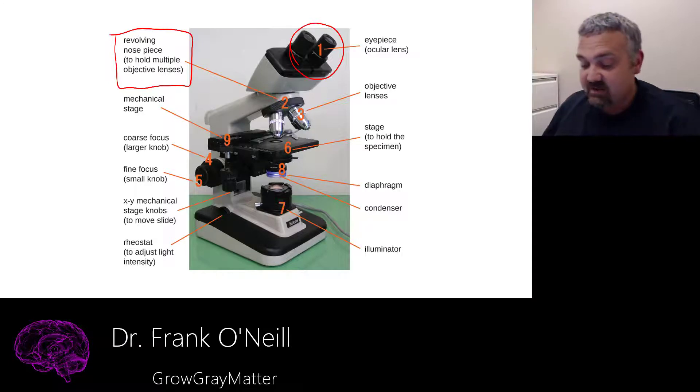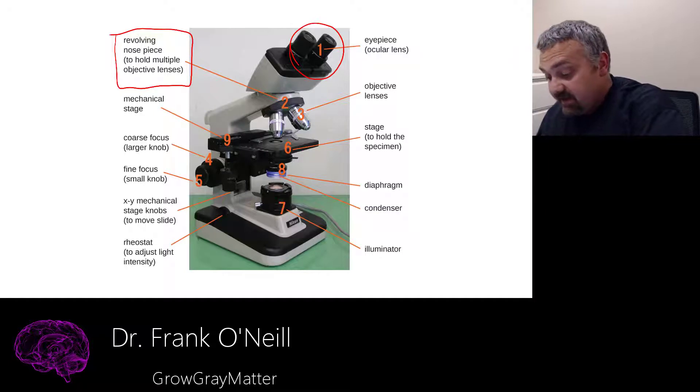Number three is the actual objective lenses. So if those are the four lenses you have, then your first objective lens, the scanning power, will give you a magnification of 4x. The second, the low power, will give you a magnification of 10x.